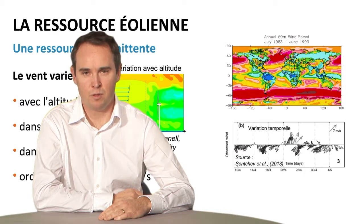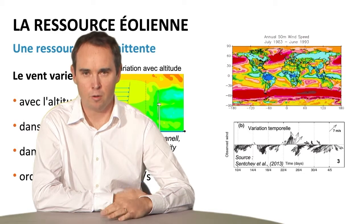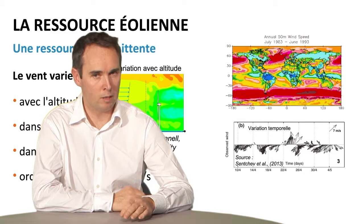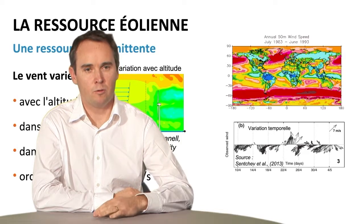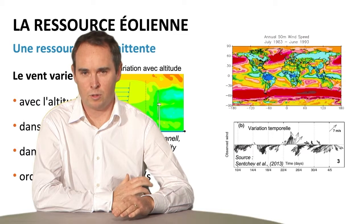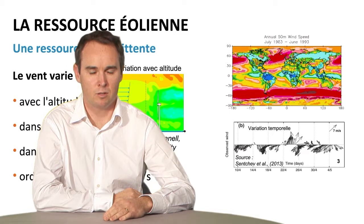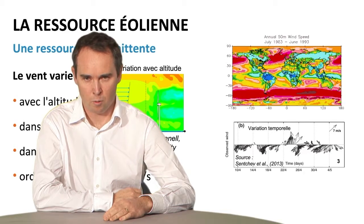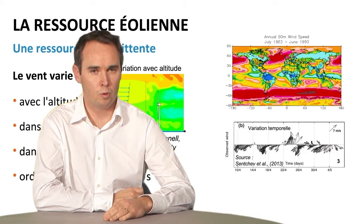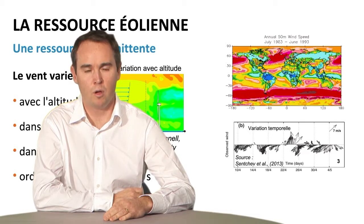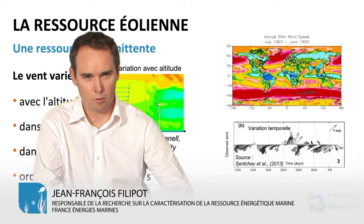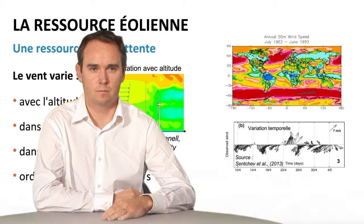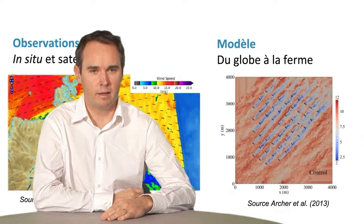Wind varies in space at finer scales. For instance, when there is a storm, wind variation will take place within a few kilometers of scale. Time variation also may take different forms: it may vary over 24 hours during a low pressure period, then there can be a one-hour variation during a storm, or even one second when there is a gust of wind. Gusts are associated with the turbulence when the wind rubs on the surface of the ocean.